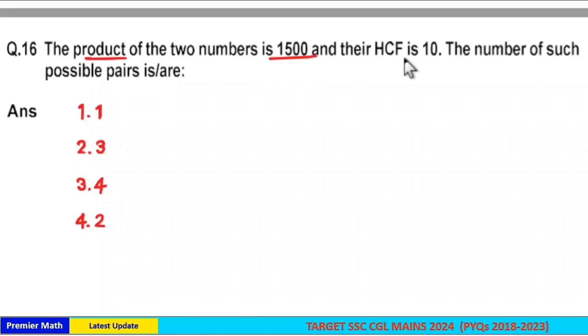The product of two numbers is 1500 and their HCF is 10. The number of such possible pairs is: